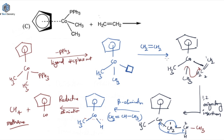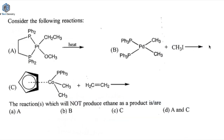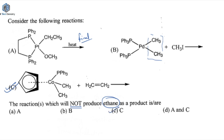Now if you look at this reaction, in none of the steps is ethane formed. Looking at the question again — which reaction will not produce ethane as the product — in the first reaction the final product was ethane, in the second reaction reductive elimination of ethane was done in the first step, but in the third reaction there was no formation of ethane — only methane was formed. So the answer is option C.